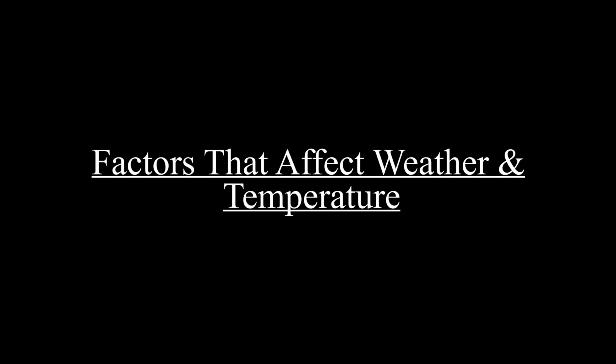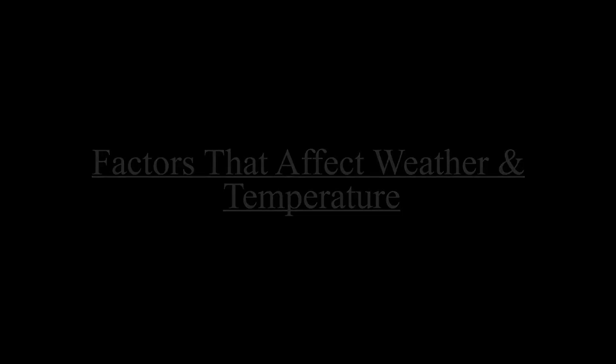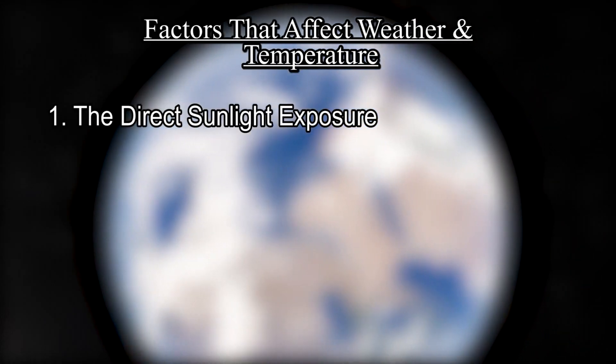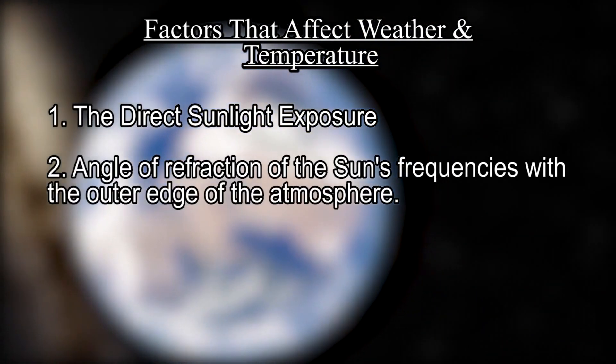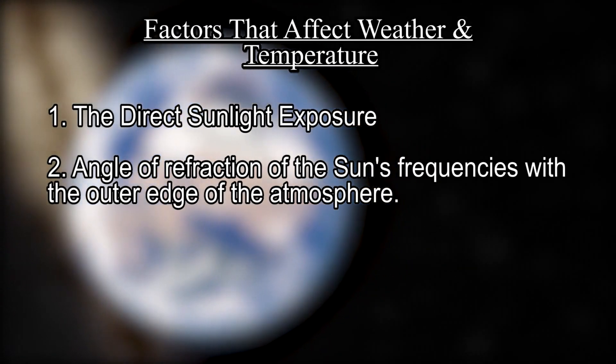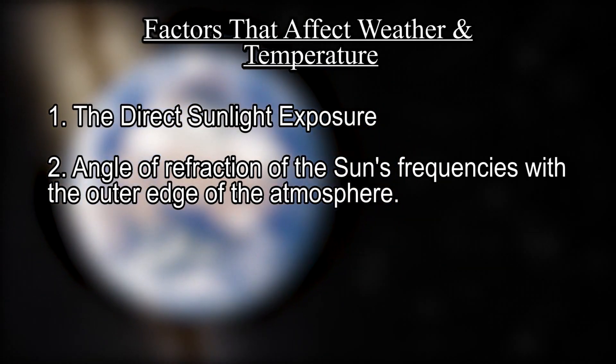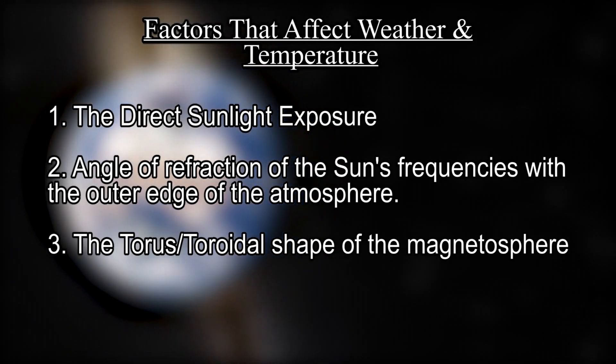Factors that affect weather and temperature: the direct sunlight exposure and atmospheric air pressure interacting with the sun's currents, the angle of refraction of the sun's frequencies with the outer edge of the atmosphere, and the torus or toroidal shape of the magnetosphere.